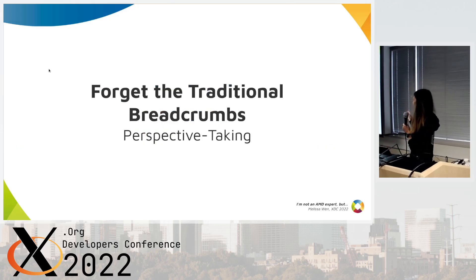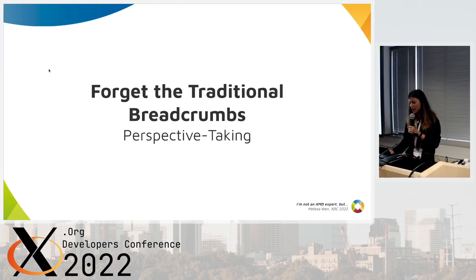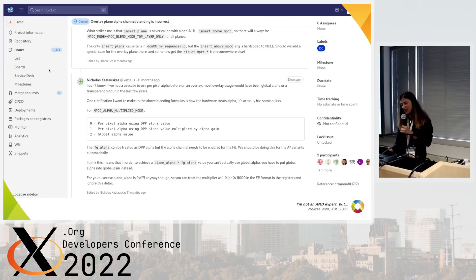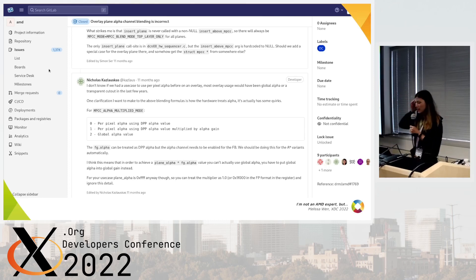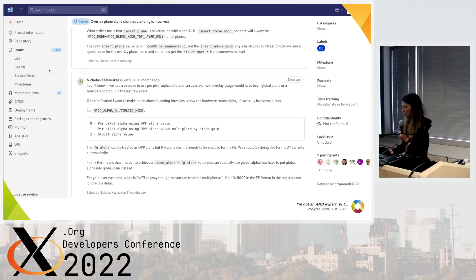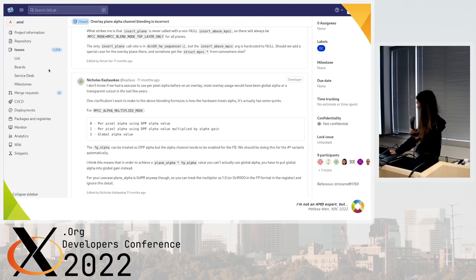Forget the traditional breadcrumbs — you need to take an alternative perspective. I introduce you to the new Stack Overflow: the AMD issue tracker. For example, in one issue I found valuable information for debugging the DRM alpha blend mode issue. I was also able to enable another blend mode that was not previously supported by the driver.